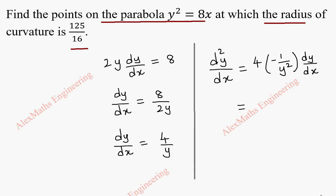The differentiation of 1/y is minus 1 by y squared into dy/dx. We replace dy/dx, giving minus 4 by y squared into 4 by y, so finally d²y/dx² equals minus 16 by y cubed.